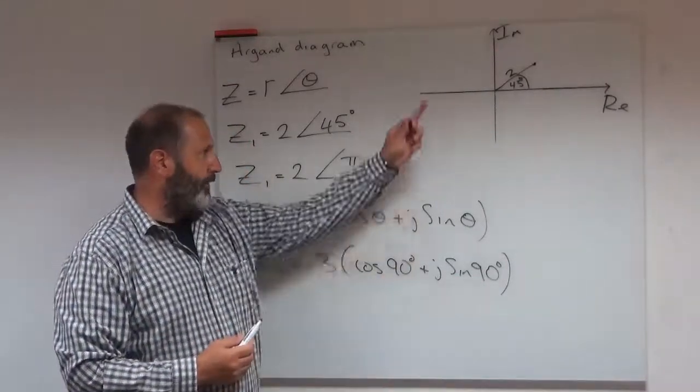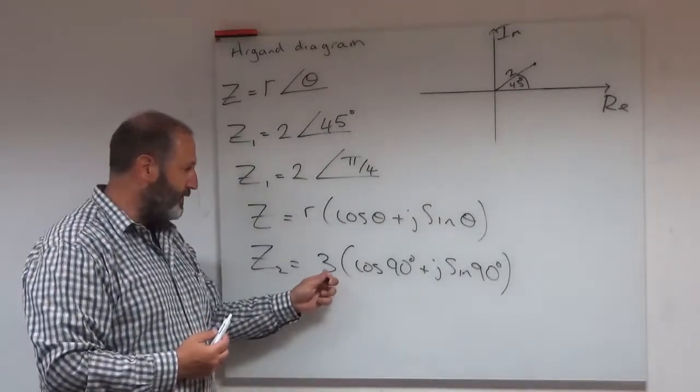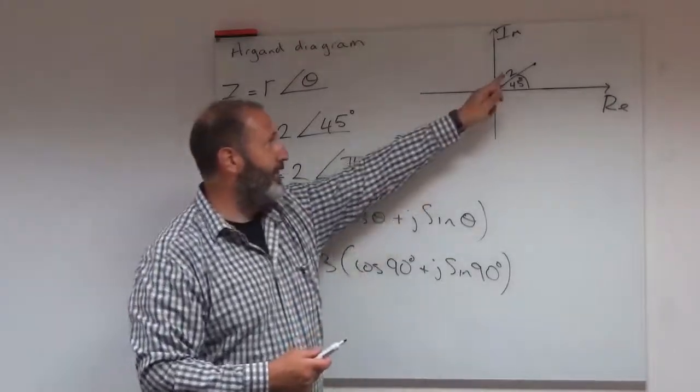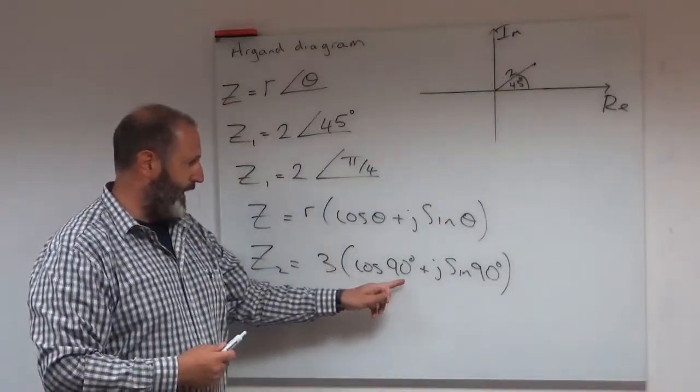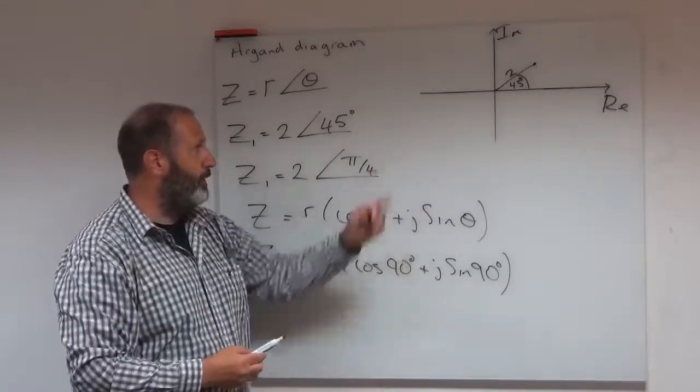Now, if I want to plot that on there, all I need to know are the two things. What's the distance from the origin? How long is the line? And then, what angle do I subtend anti-clockwise from positive real axis?